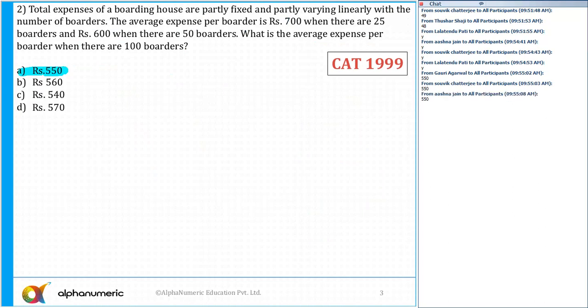Again, there are a lot of shortcuts for this particular type of problem which we have discussed in the class. The total expenses of a boarding house are partly fixed and partly varying linearly with the number of boarders. Average expense is rupees 700 when there are 25 boarders.